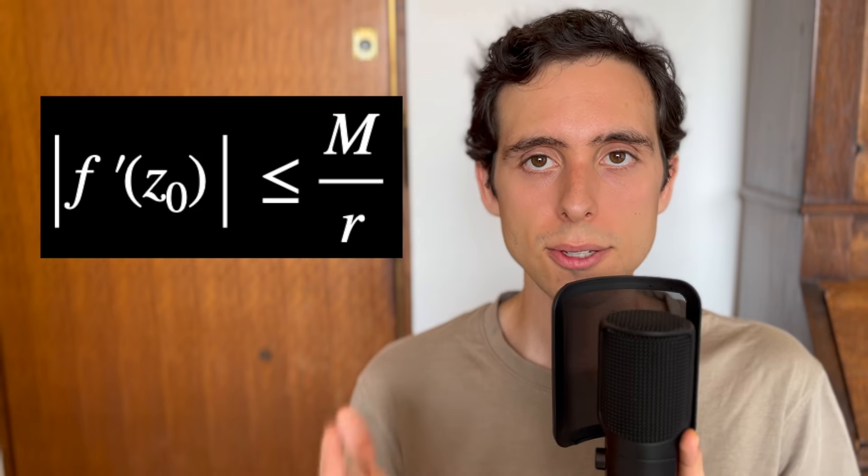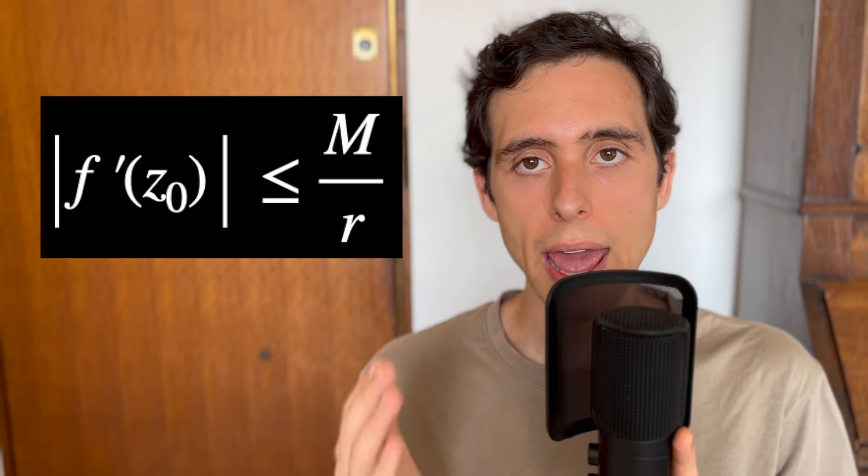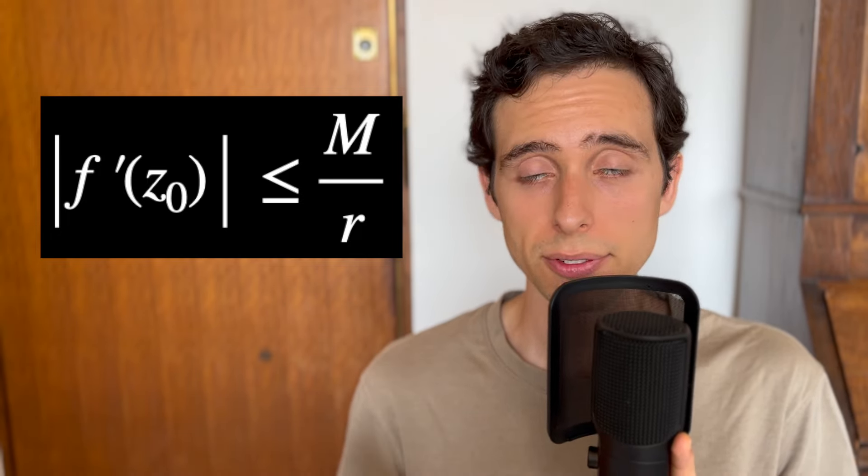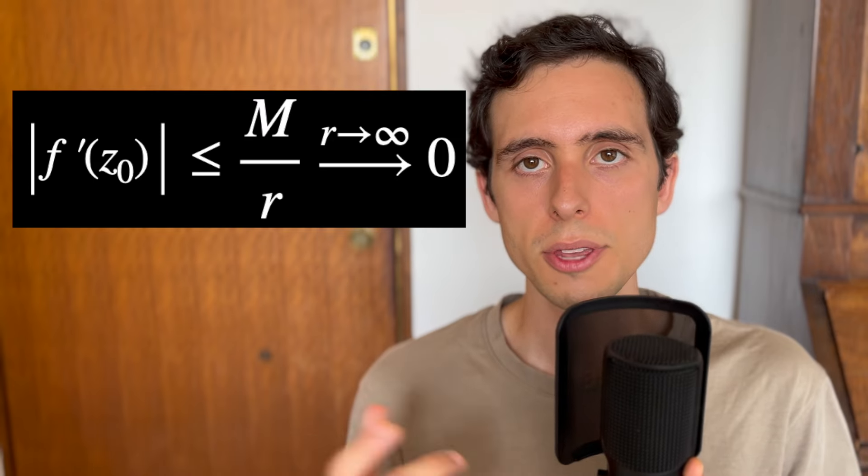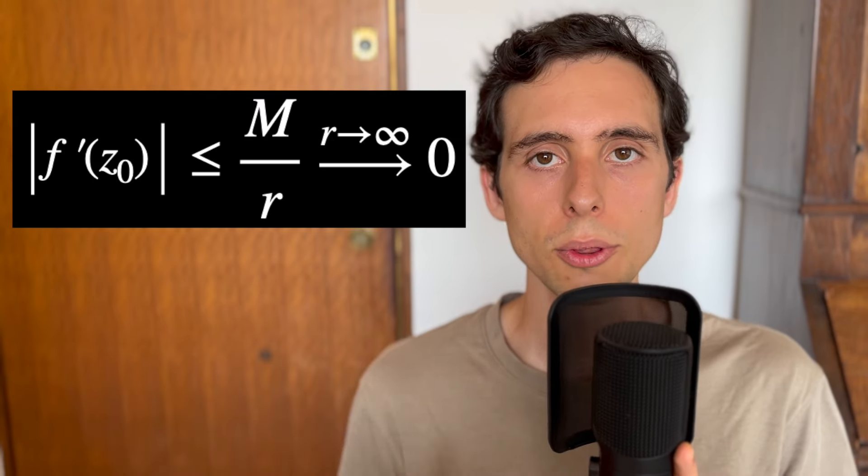And thus, I can write this. So this module is smaller or equal than m/r for a fixed m positive and for any r positive large enough. The final step is to make r tend to infinity, which makes the fraction m/r go to zero. And therefore, this module must be less or equal than zero. So it is zero.